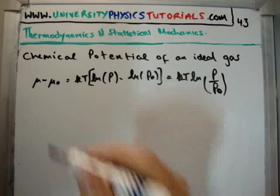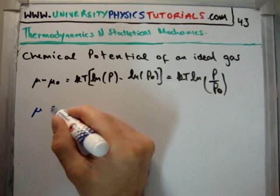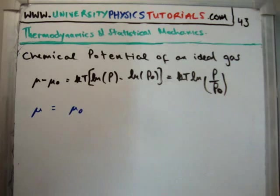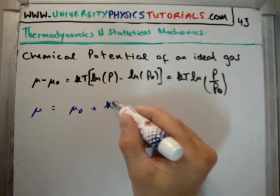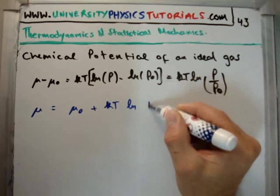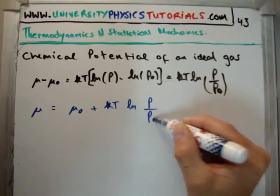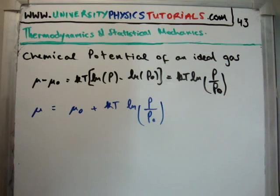So another way of writing this is that the chemical potential that we have at the moment is the chemical potential which we started with plus KT, the natural logarithm of the ratio of the current pressure and the initial pressure.